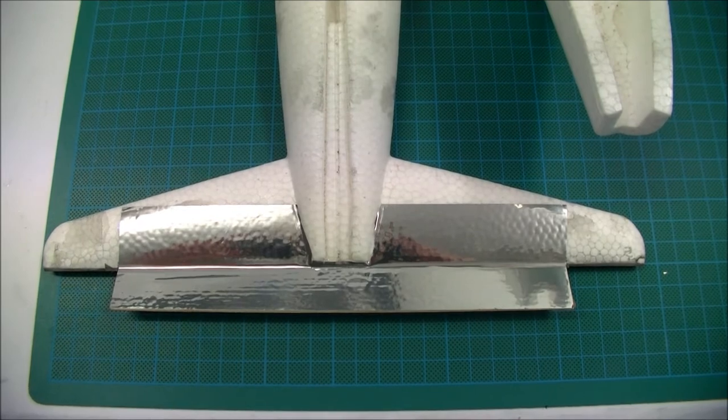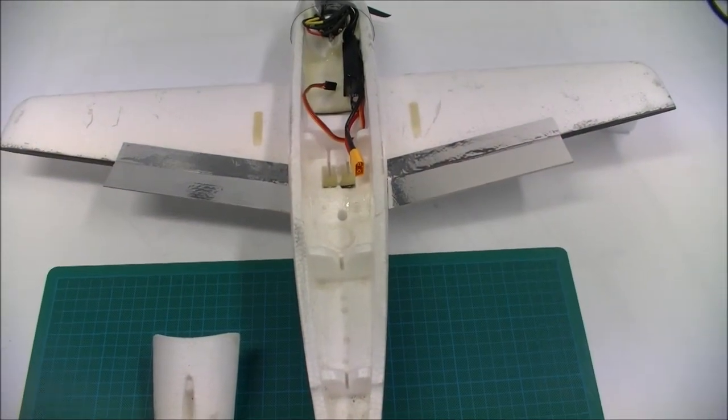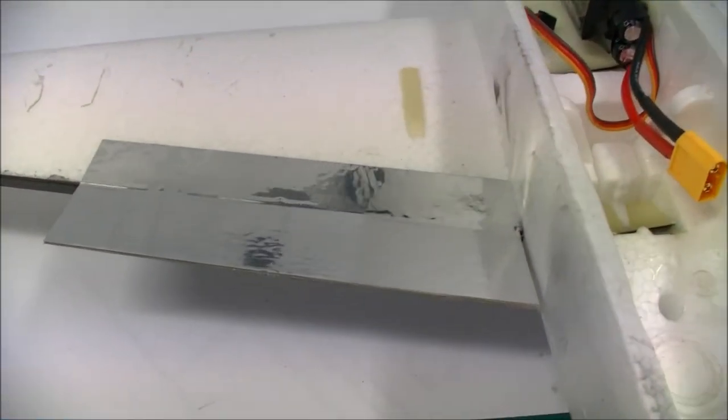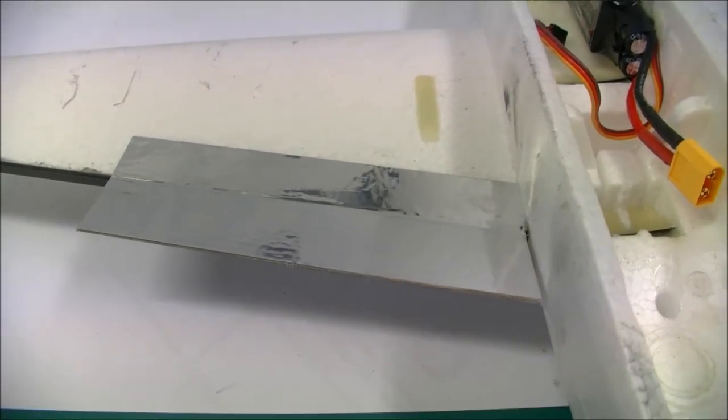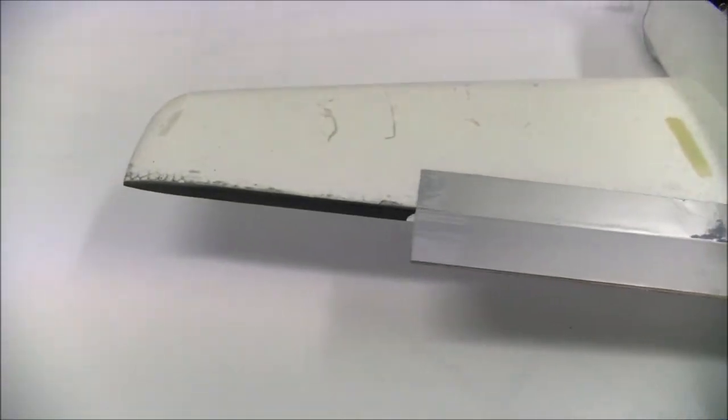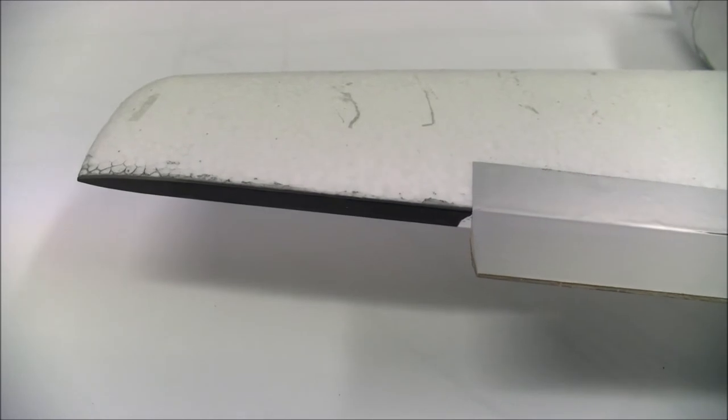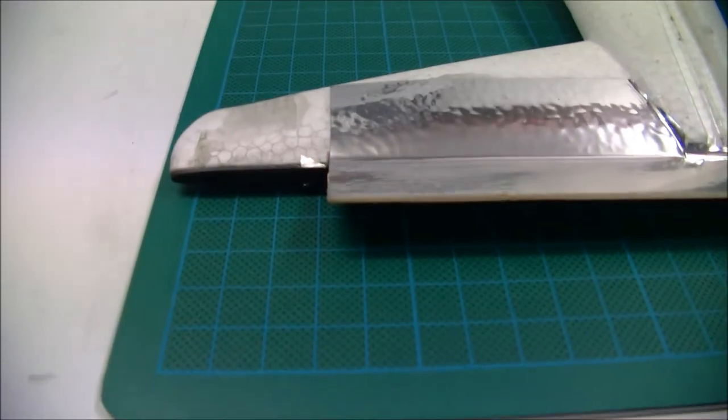The elevator and ailerons have now been hinged. All I've used is a foil tape which you can find from any hardware store. The next step now is to glue on the trailing edges for the wing tips and for the tail.